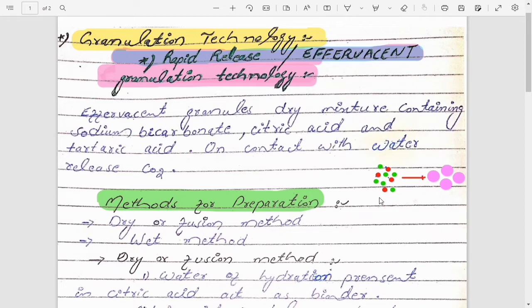Granulation is a size enlargement process in which small particles are brought together to form a physically hard and large size particle. These particles are called granules. So why we need granulation? Why we need to form granules?